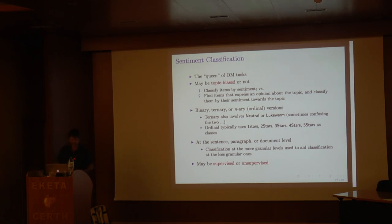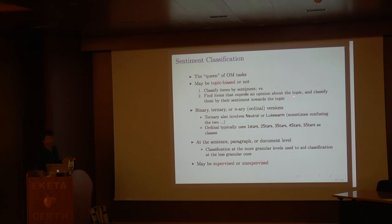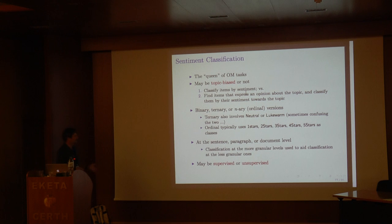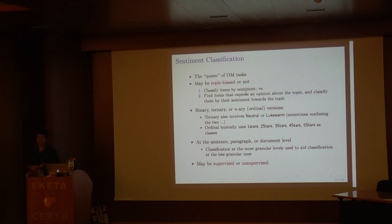Sentiment classification is the most important of these opinion-mining tasks. Typically we work on topic-biased versions: find items that express an opinion about the topic, then classify them by sentiment towards that topic. There are binary (positive vs. negative), ternary (adding neutral), and ordinal (one through five stars) versions. Sentiment classification can also be carried out at different levels of granularity: sentence, paragraph, or document level.